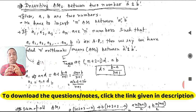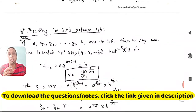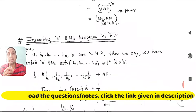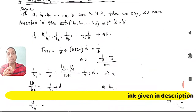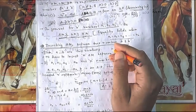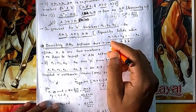Today we will see how to insert n numbers of arithmetic means between two numbers, also n numbers of GM between the same numbers, and also n numbers of HM between two numbers.